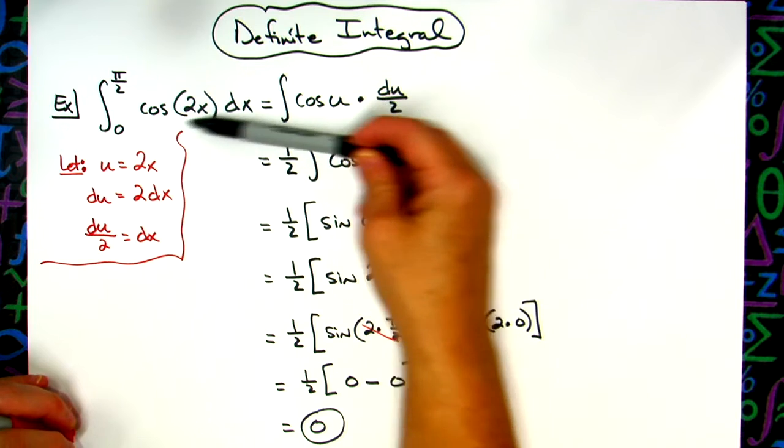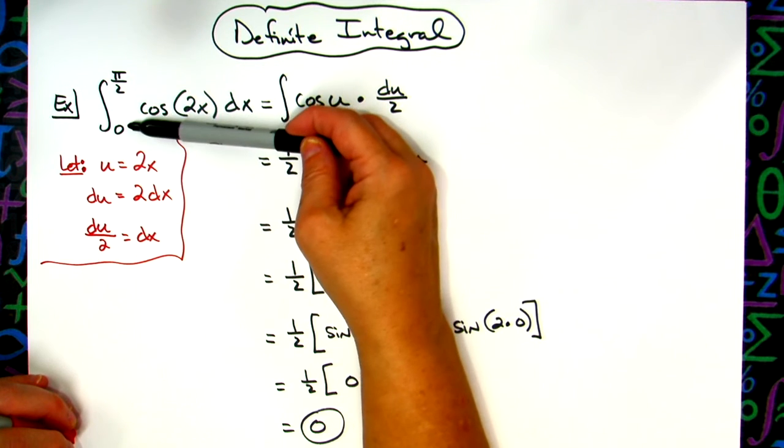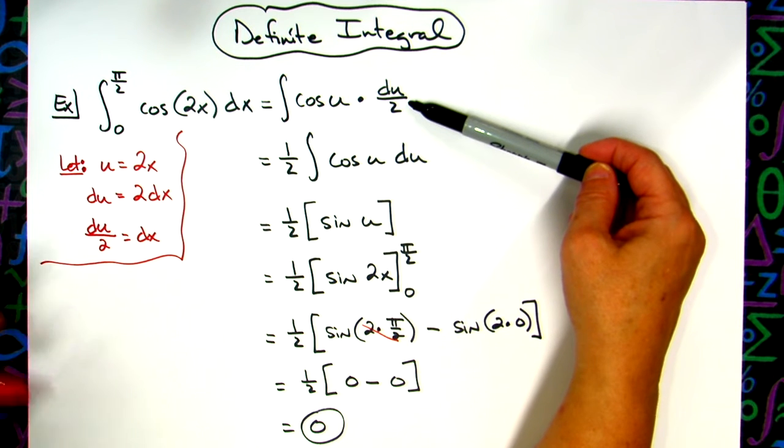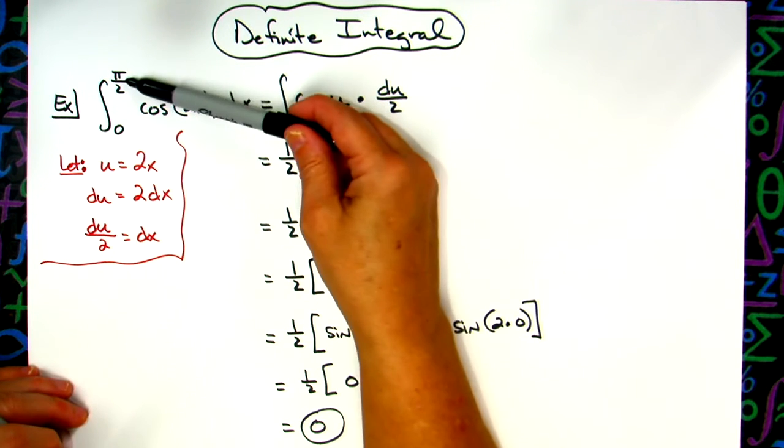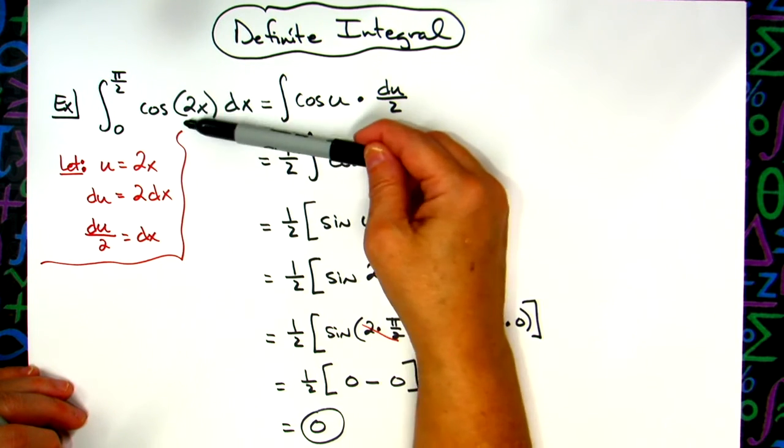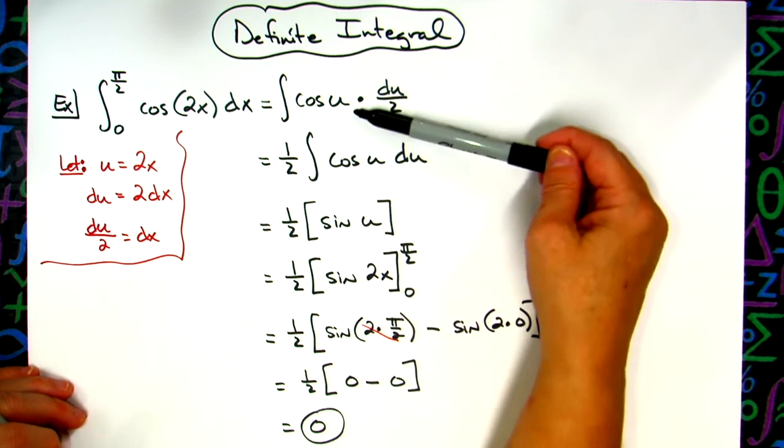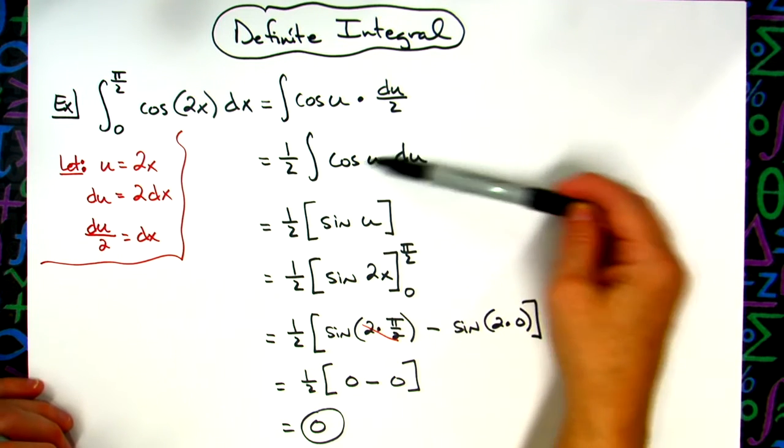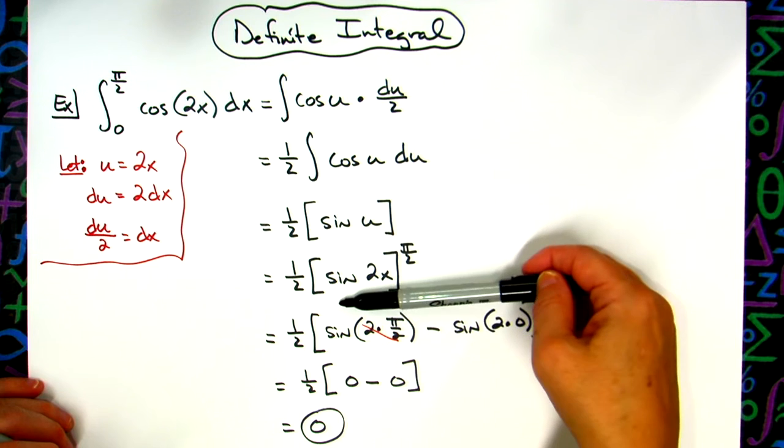I really want to emphasize the fact that this is in terms of x, so these are limits of integration for x. When I rewrite the equation in terms of u, there is a way that you can change these to limits of integration for u, but this was a simple enough problem. I didn't feel like we needed to do that. Work the problem in terms of u. Once you plug it back in, you're back in terms of x, then you can reintroduce those limits of integration for x.